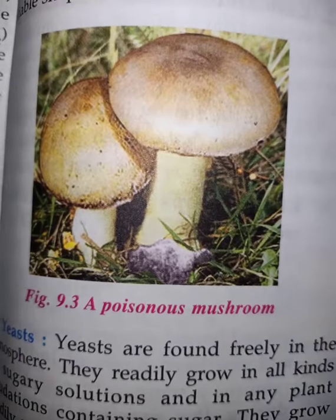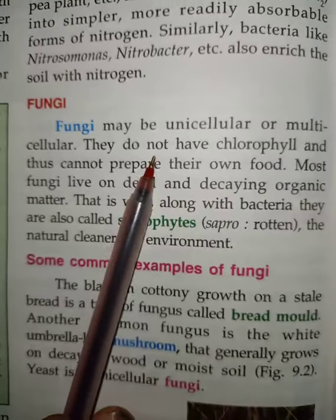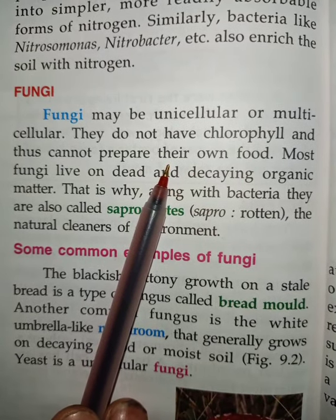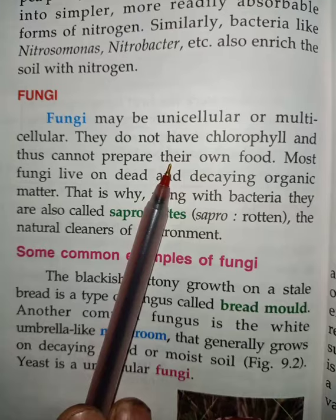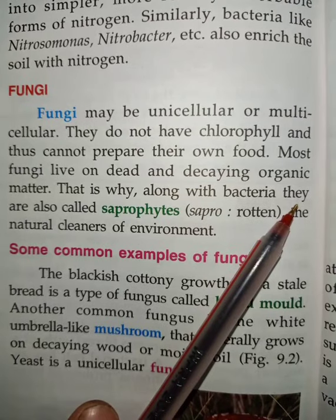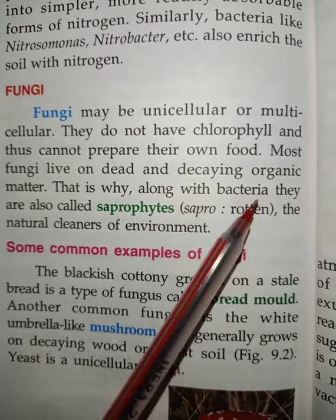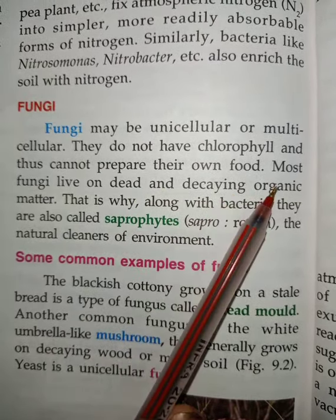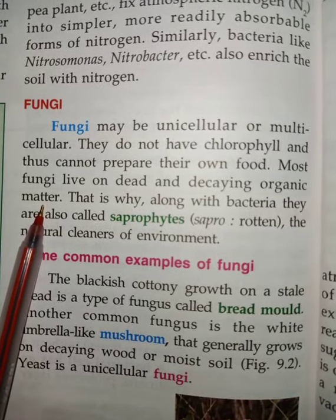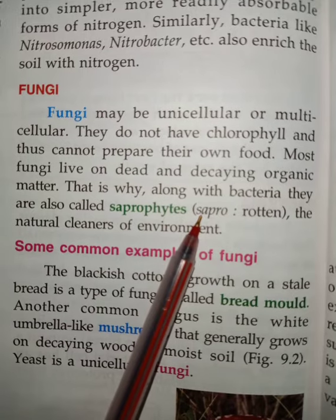Mushrooms contain a lot of proteins and minerals — they are highly nutritive. But if we eat bad mushrooms, those mushrooms can be very poisonous. These mushrooms are button-shaped but they are not greenish in color. Fungi do not have chlorophyll; thus, they cannot prepare their own food. Because they do not contain chlorophyll, they live on dead and decaying organic matter. That is why they are also called saprophytes.